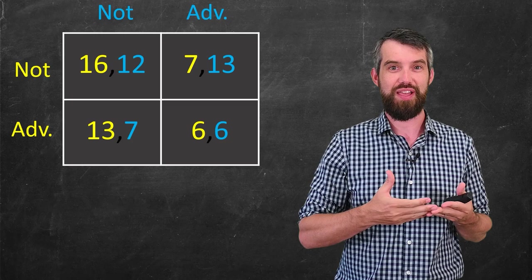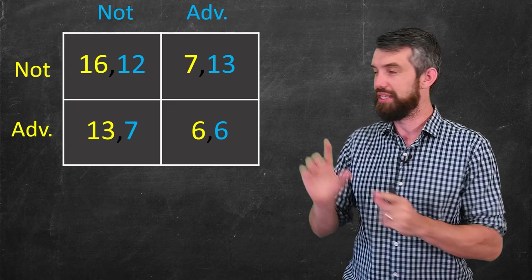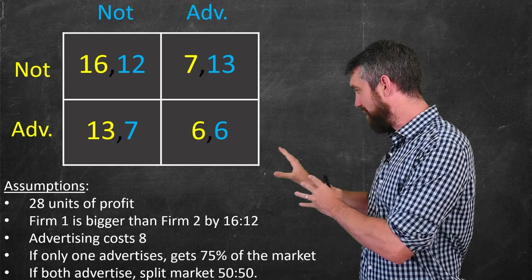in the not-not scenario, that's where both of them don't advertise, firm one, the yellow, gets 16 units of profit, and firm two, in the blue, gets only 12 units of profit. Now what we're going to do is analyze this normal form game. But I just want to note that this type of normal form game comes about from, you know, some somewhat realistic assumptions.